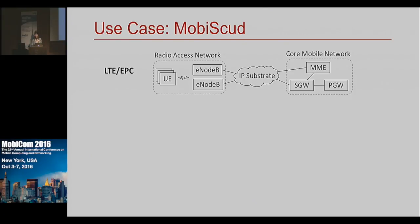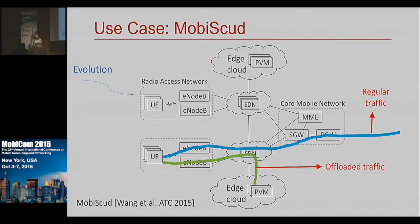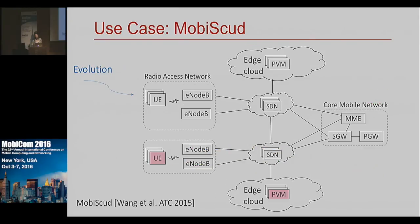Then there is MobiScud, also from the literature. It is an extension of SMORE — EPC evolved to support more of a cloudlet-like low-latency offloading by adding an SDN substrate. Users have personal VMs located within the edge cloud, so as users move and attach to other eNodeBs or base stations, their personal VMs also move in concert. The regular traffic goes through the normal path, and there is also offloaded traffic.